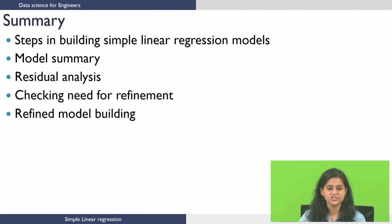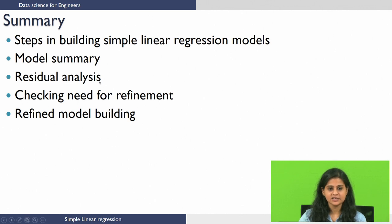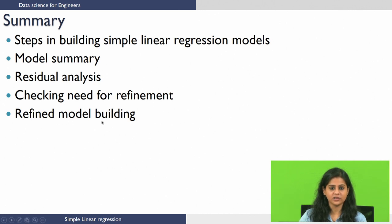To summarize, across these three lectures we looked at the steps taken in building a simple linear regression model. We saw how to interpret the results from the summary for these models, and we looked at residual analysis — including how to treat outliers. We also saw how to identify significant coefficients in our model and how good our model is. We saw the need for checking and refining existing models, and then we built a refined model without any outliers.